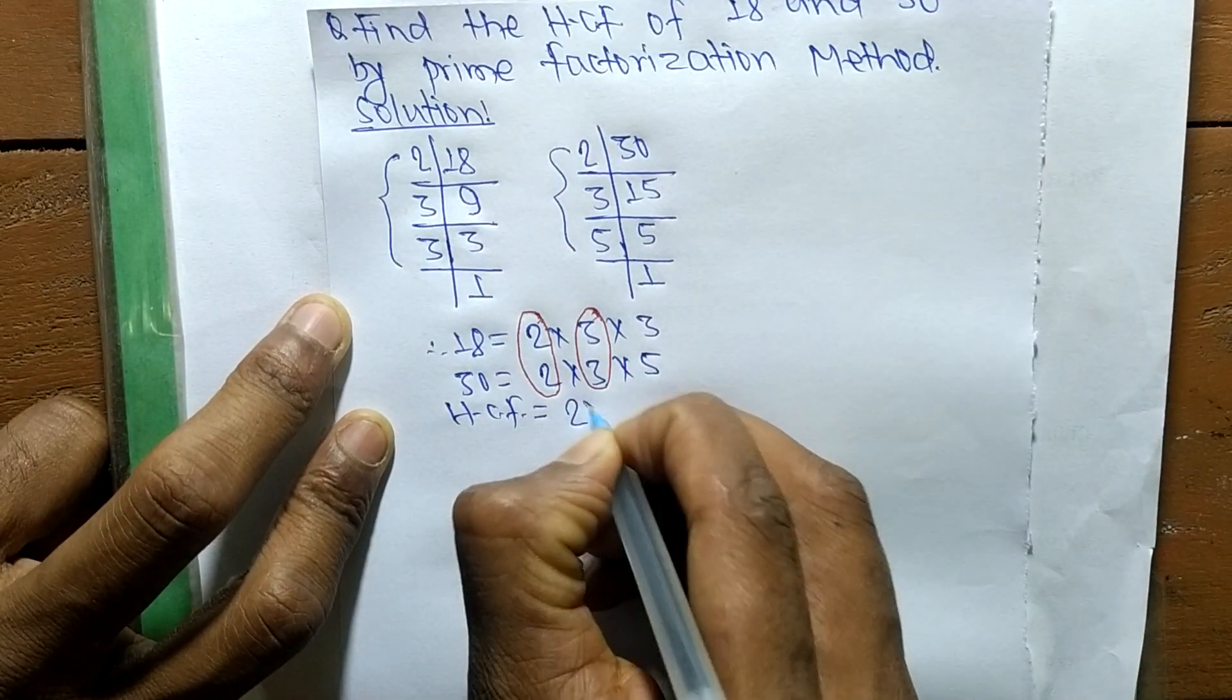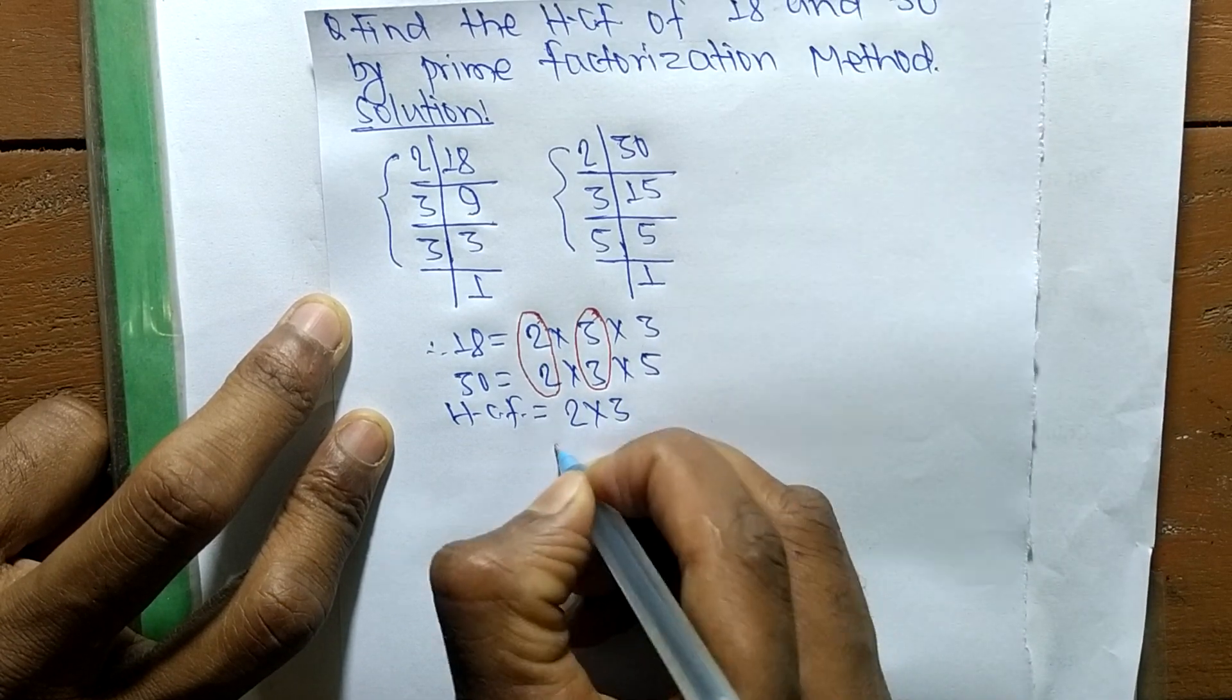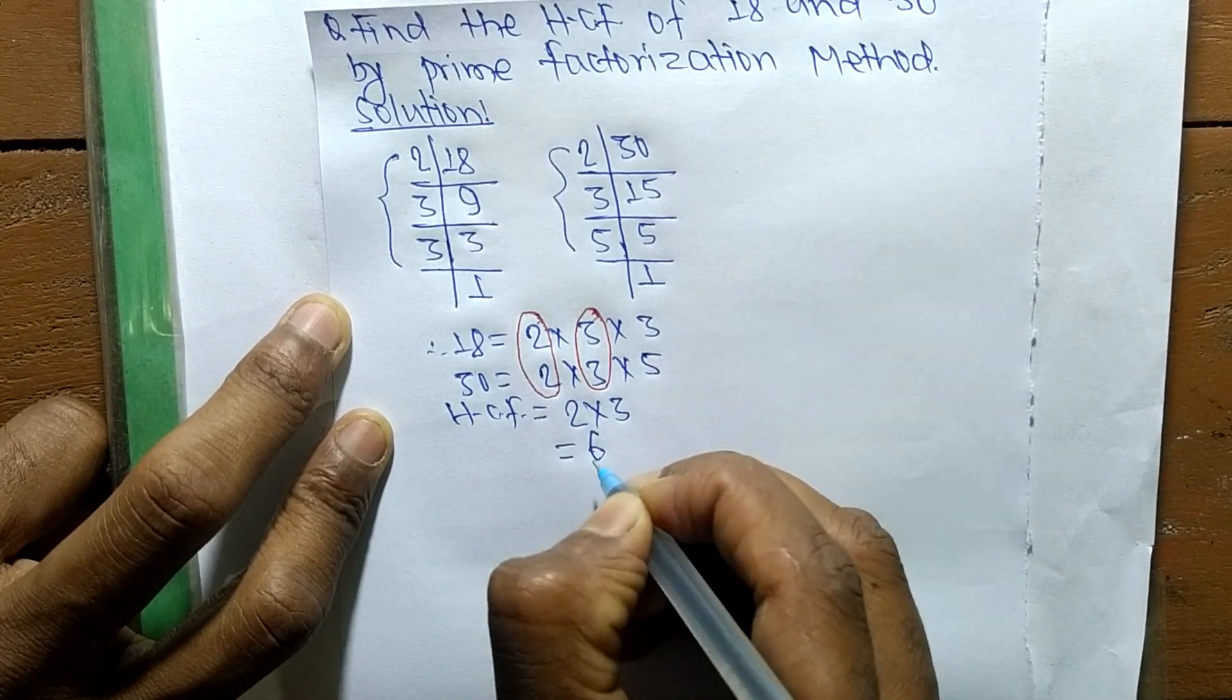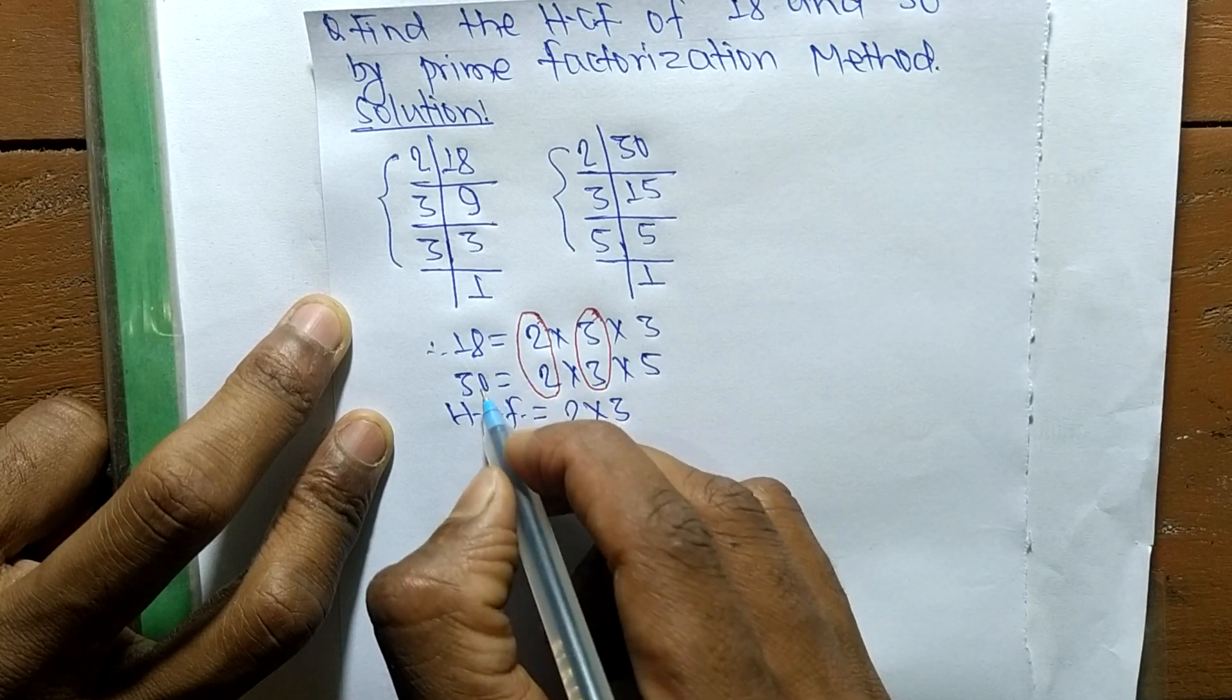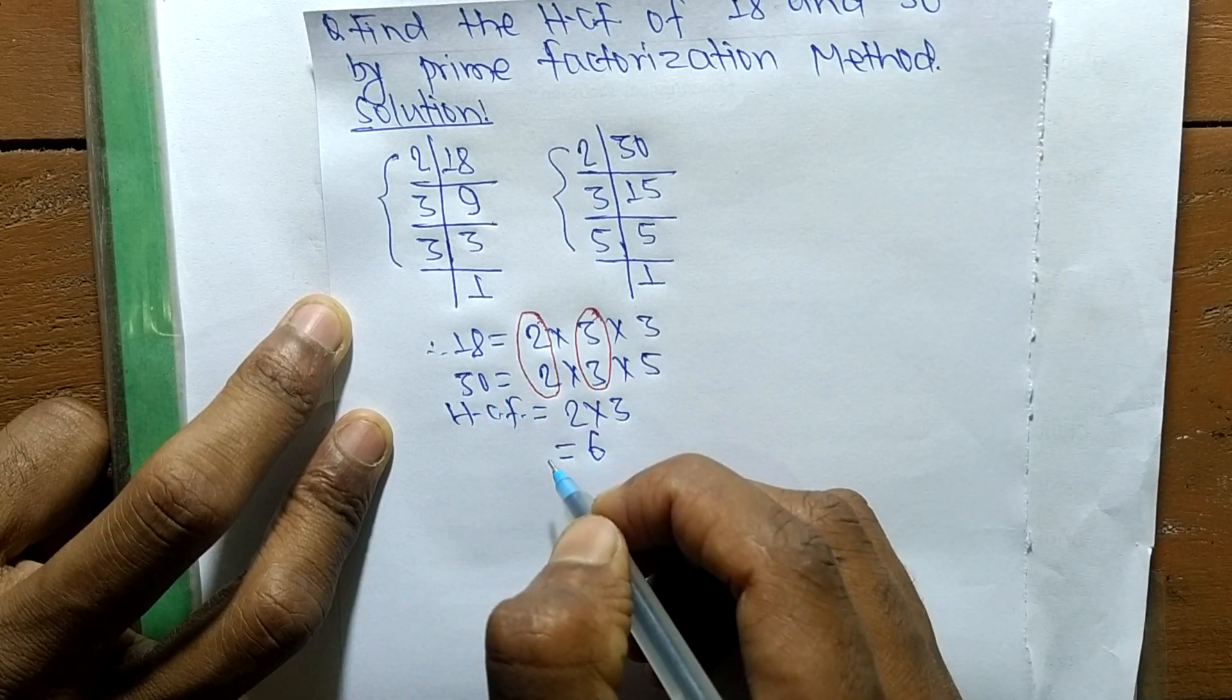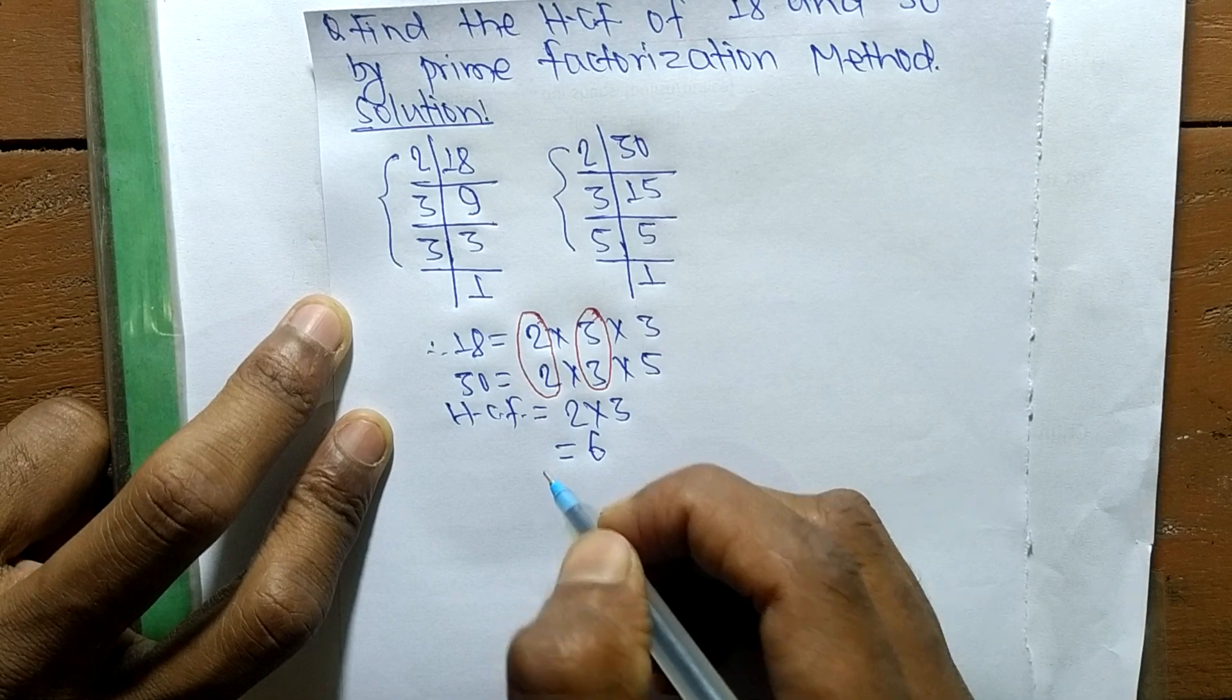HCF is the product of all the common factors, so it is 2 times 3 equals 6. So 6 is the highest common factor of 18 and 30. Thanks for watching.